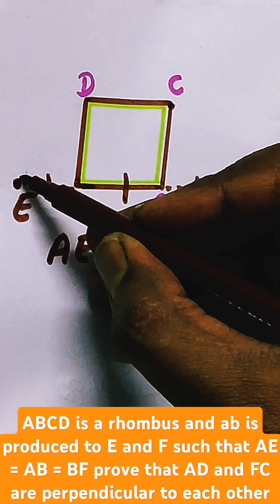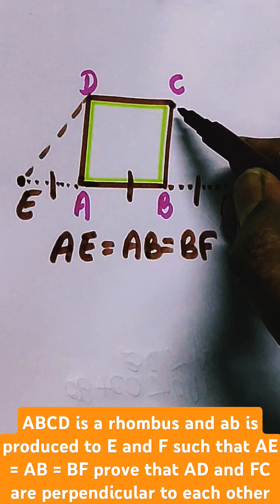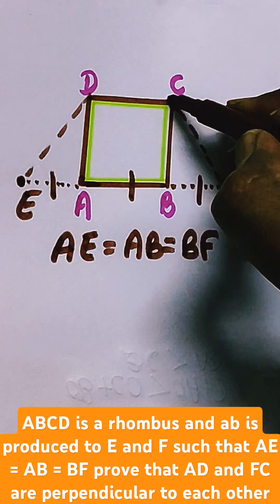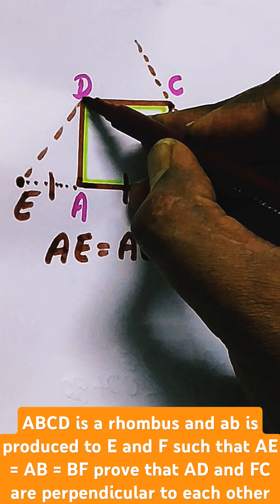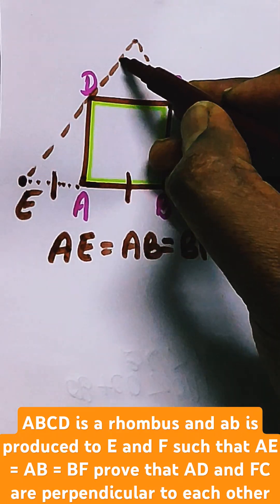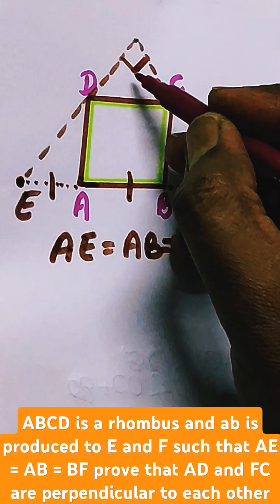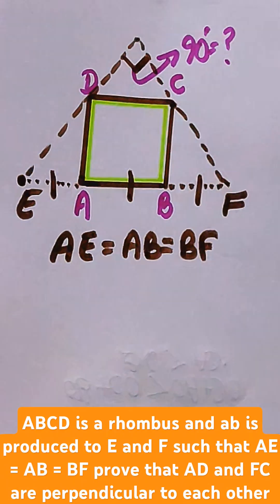Basically you need to extend it, and when the extension of ED meets, you need to prove this angle as 90 degrees. This is what we need to prove.